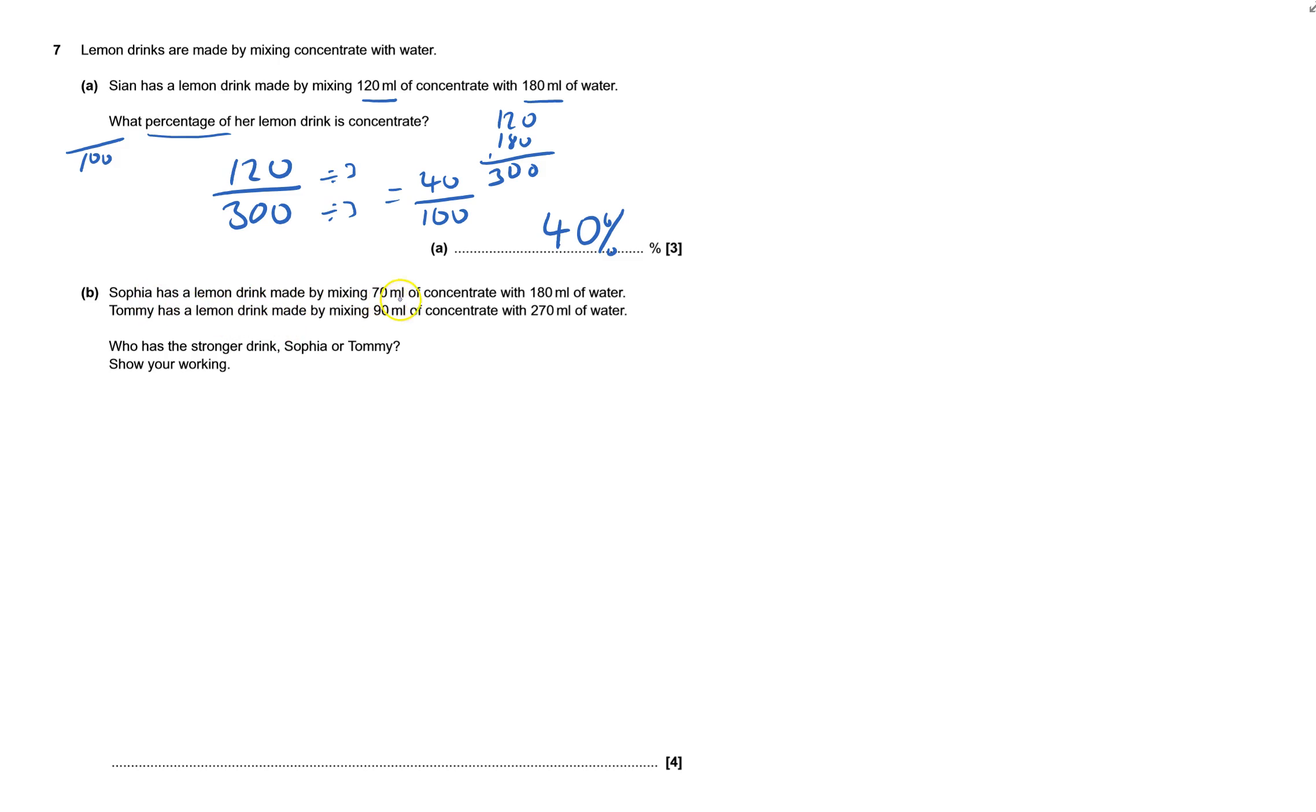Sophia has a lemon drink made by mixing 70 millilitres with 180 and Tommy has something else. Who's got the stronger drink? So Sophia, I'll put a few little words down so we know who we're dealing with.